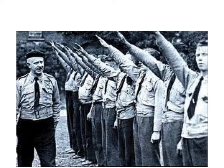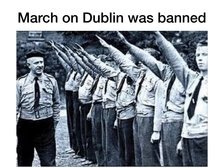O'Duffy was a fascist who looked up to people like Mussolini and Hitler and the strong-man policies that they used. In 1933 he tried to have a march in Dublin, much like the March on Rome, although he claimed he never wanted to actually take power. It wasn't meant to be a revolution, just a march, but it was banned by de Valera and the march didn't go ahead.